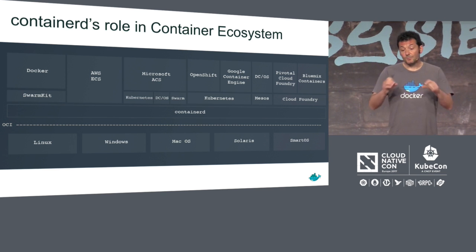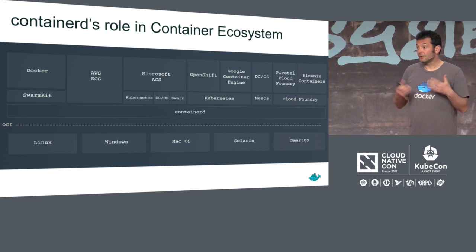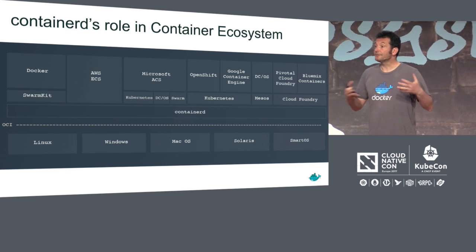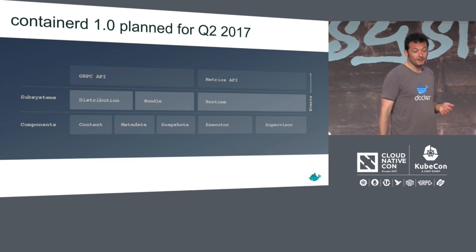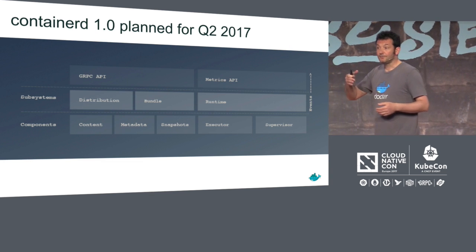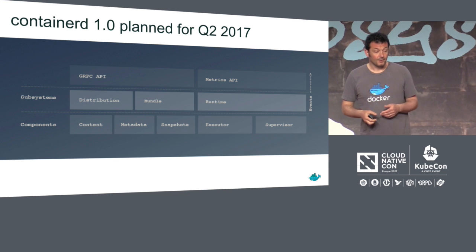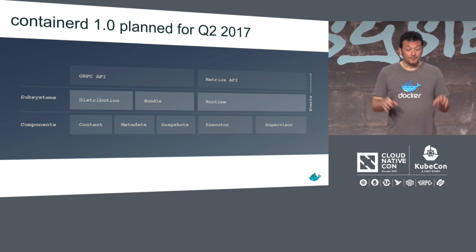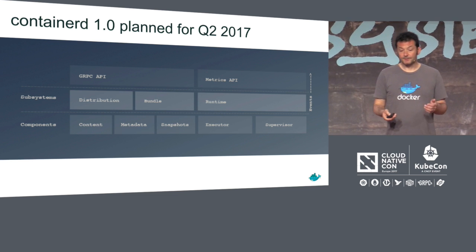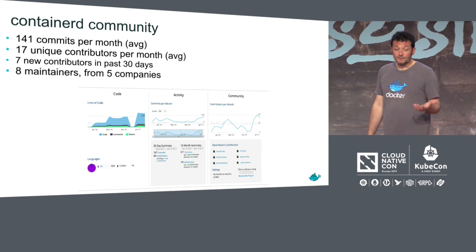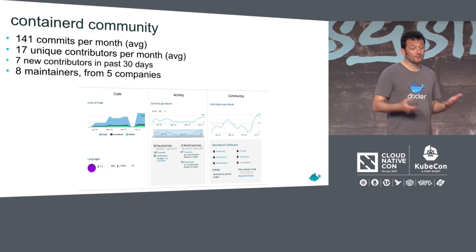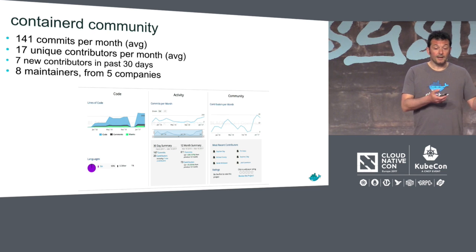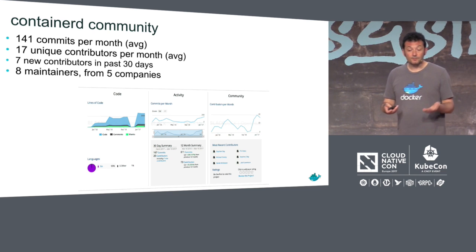On top of the OCI standards layer, implementing the specs is Containerd, the Core Container Runtime. From there you can build your own orchestration. Containerd is really designed to be embedded — it exposes a gRPC API as well as a metrics API that follows the Prometheus format. It is composed of several subsystems: one for distribution, one to manage bundles, and then the runtime itself. The community is vibrant, with 141 commits per month and eight maintainers from five different companies.